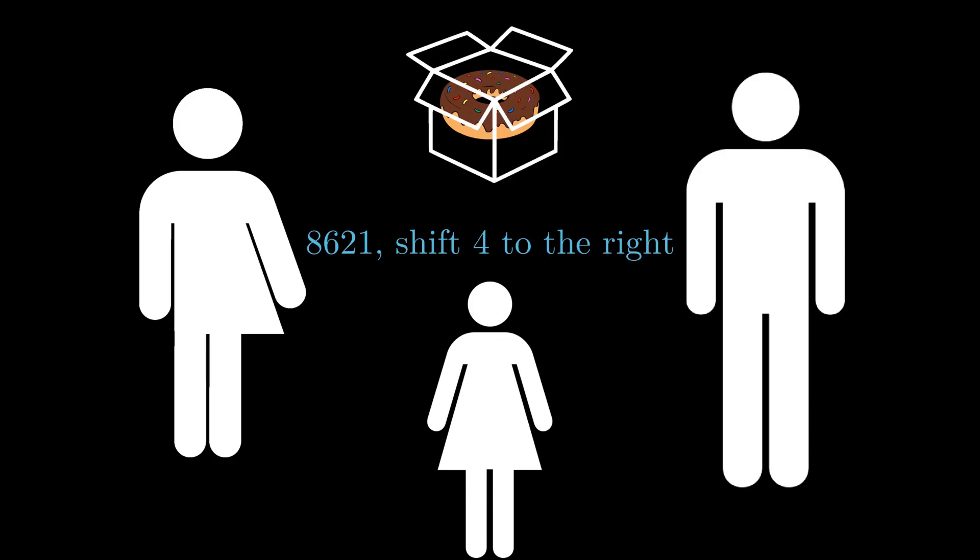The problem we've come across is that sending these rules to Bob so he can obtain the original code always seems to result in Emily also having the rules. It seems easy to send Bob the rules, but it's also easy for Emily to have them. Ideally, we'd want a situation where it's easy for you and Bob to agree on the rules, but Emily would be stuck trying to figure them out.